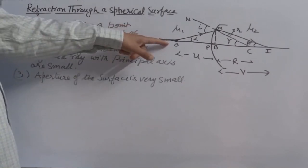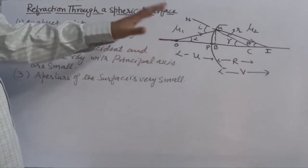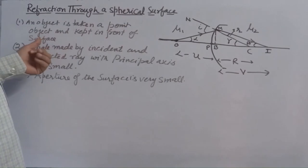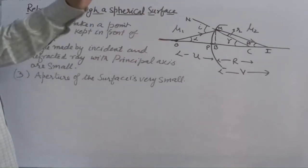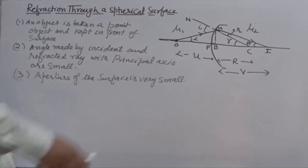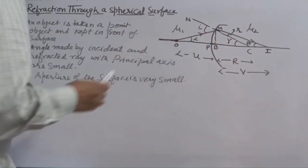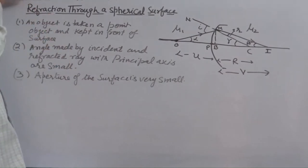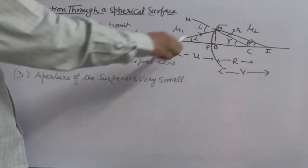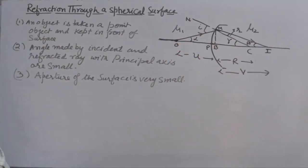1. Object is taken as a point object. It is kept in front of the surface on principal axis. 2. Angle made by incident ray and refracted ray with principal axis are taken very small. 3. Aperture of the surface is taken very small.